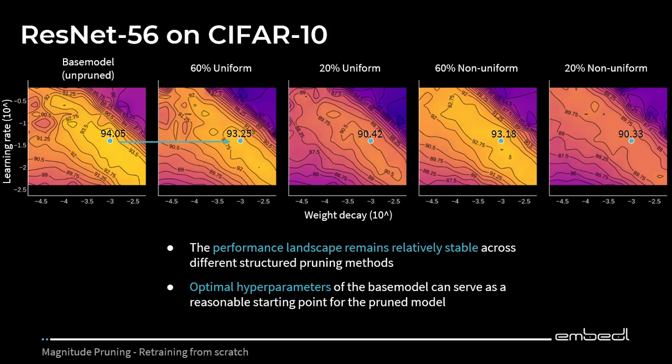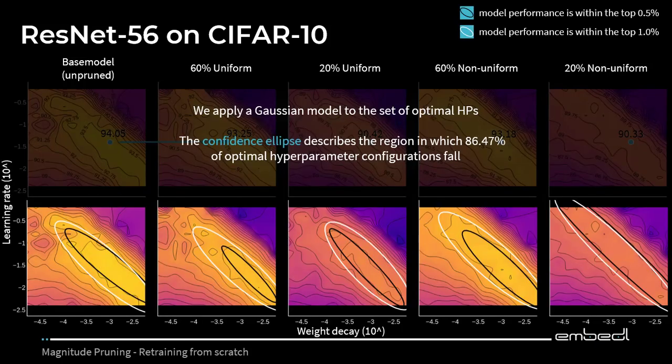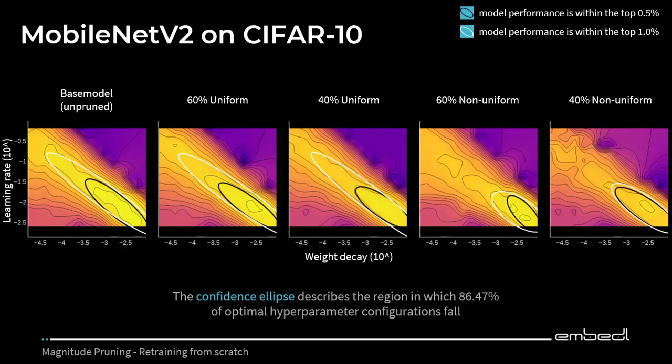To further investigate how the optimal areas change after pruning, we looked at confidence ellipses. These ellipses — the black and the white ones — essentially describe the area of the optimal hyperparameters. The black ellipses are the area of the optimal hyperparameters within the top 0.5% in terms of top-1 accuracy, and the white ellipses within the top 1%. Similar to our initial investigation, there's no clear shift and no clear trend after pruning. We also looked at MobileNet-V2 on CIFAR-10, and similarly there's no big difference in the performance landscape; the initial parameters of the base model perform quite well on the pruned models as well.